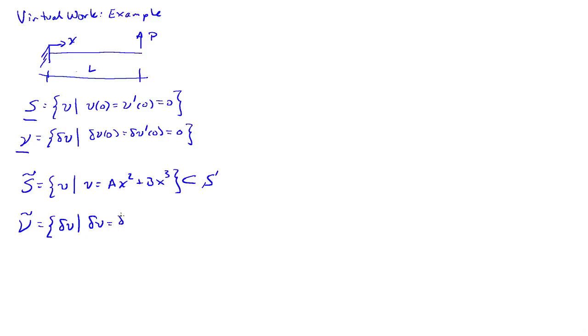So they too will have a parameter del A times x squared plus del B x cubed. And this is also a proper subset of the space of admissible variations, V.